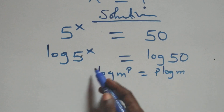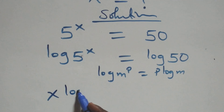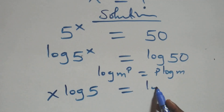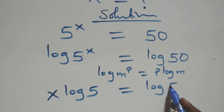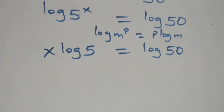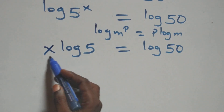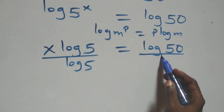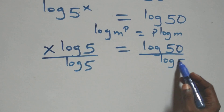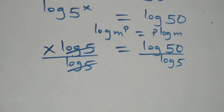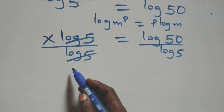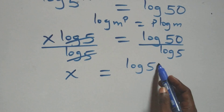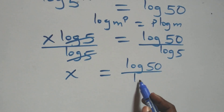Applying the power rule, this becomes x·log(5) = log(50). In the next step, we divide both sides by log(5). Log(5) cancels on the left side, and we have x = log(50) / log(5).